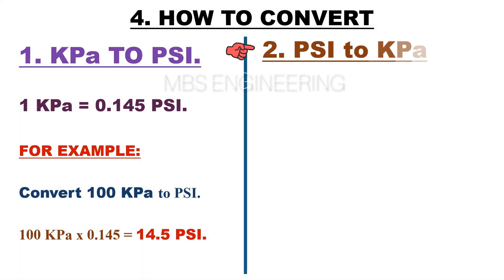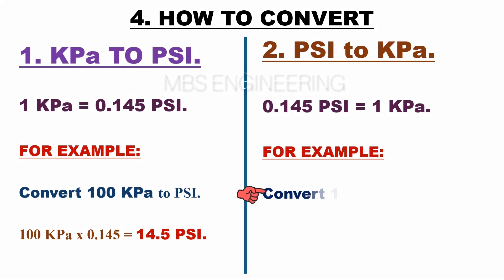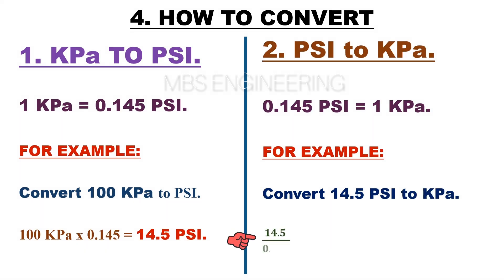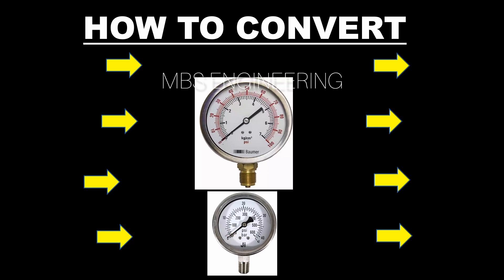Next, we will learn how to convert PSI to kilopascal. Please remember that 0.145 PSI is equal to 1 kilopascal. Sample example: convert 14.5 PSI to kilopascal. 14.5 PSI divided by 0.145 — therefore the obtained pressure value is 100 kilopascal.